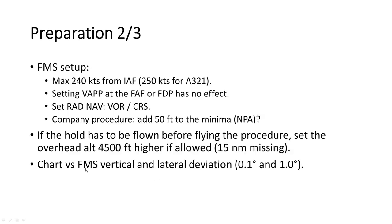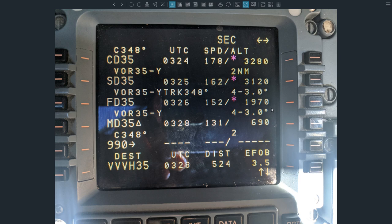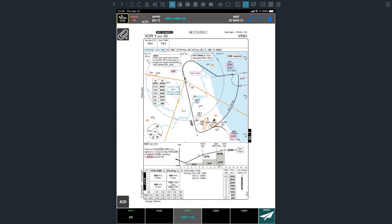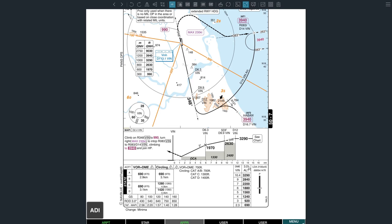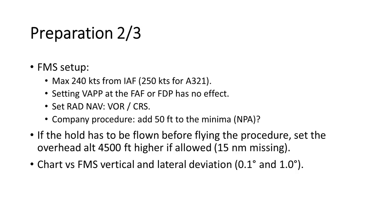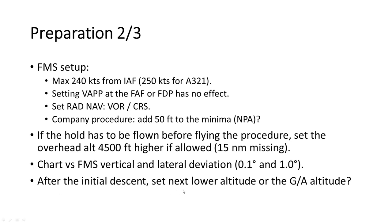You need to check the chart versus the FMS vertical coding and also the lateral coding. It has to be within 0.1 degree for the vertical coding and 1 degree for the lateral coding. Here's the FMS showing the VOR approach — we're checking the degree values and comparing with the chart. In this case, it shows 3 degrees on the FMS and 3 degrees on the chart, so we can do that managed vertically. Then after the initial descent, set the next lower altitude or set the go-around altitude — please check your company procedures.